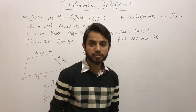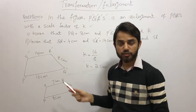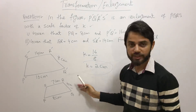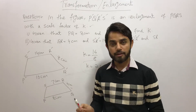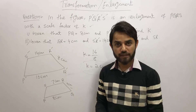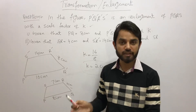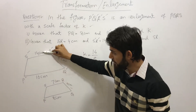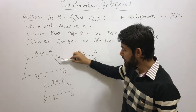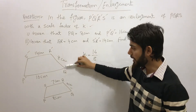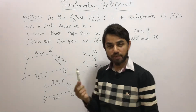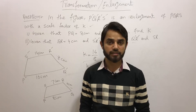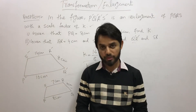This is how we use the concept of enlargement, where the scale factor is very important. Once you know the scale factor, you can find corresponding sides easily. To get the scale factor, divide the corresponding lengths of the two geometrical figures. Whatever two corresponding lengths you have, take their ratio and you will get the scale factor very easily.